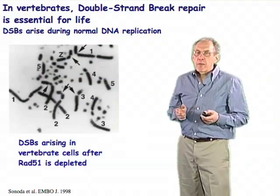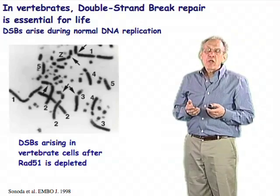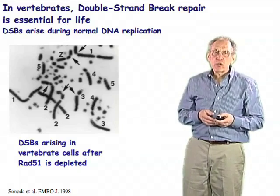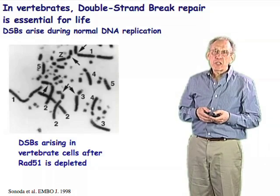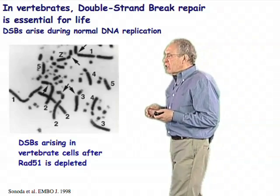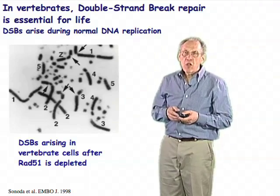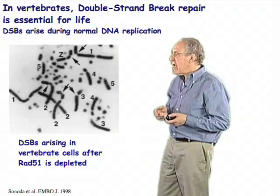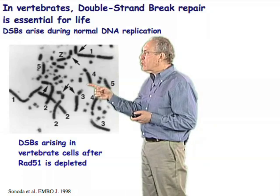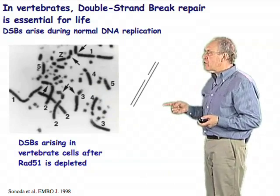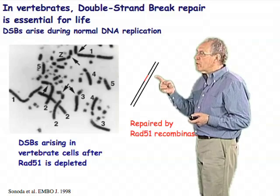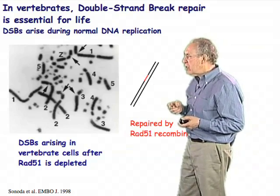Another important underlying concept is that the source of the double-strand breaks — the broken chromosomes we study — does not come from exogenous sources such as ionizing radiation or chemical exposures. It comes from the fragility of the DNA replication process itself. What's illustrated here is a vertebrate cell, a chicken DT40 cell, depleted for a protein called RAD51. In the absence of this DNA repair protein, you see a large number of chromosome interruptions called chromatid breaks — one sister chromatid strand is intact and the other has a break.